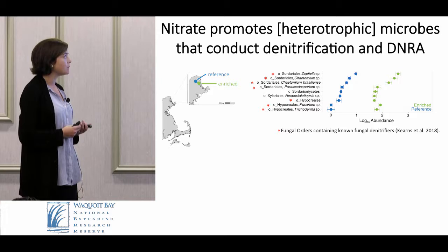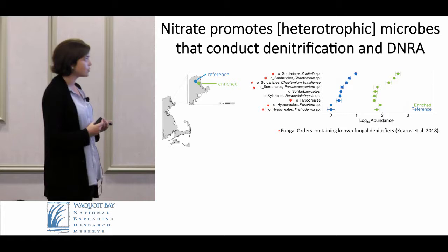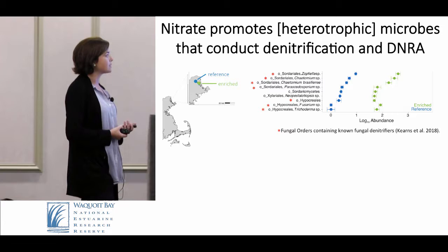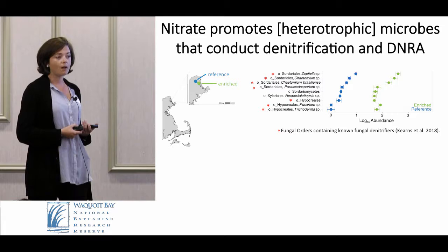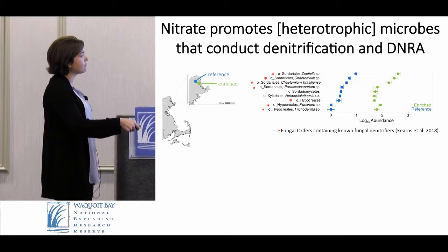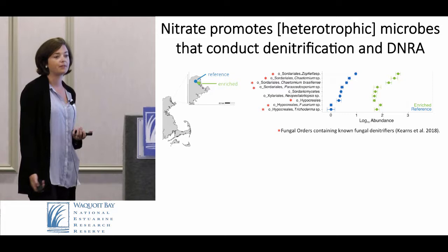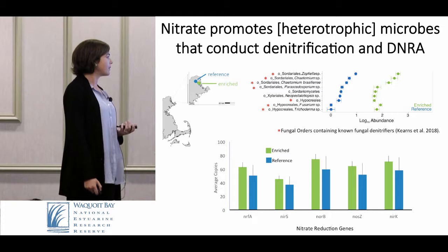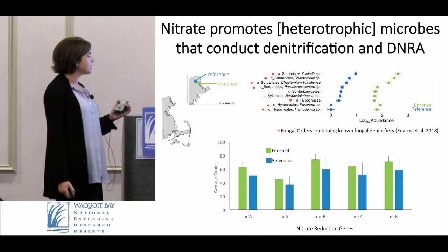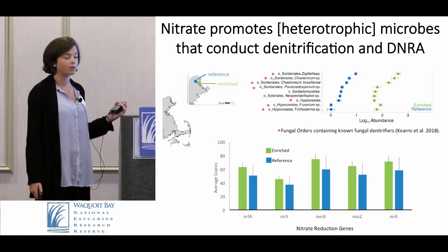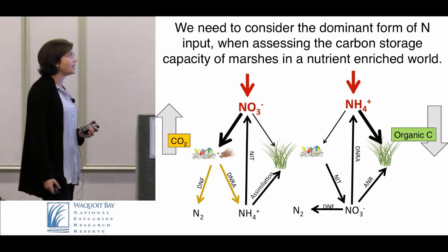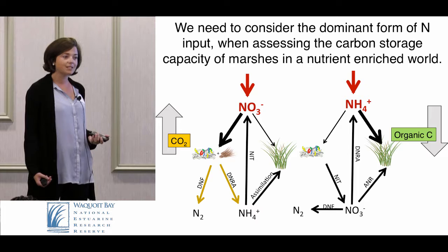Back in the field at Plum Island, using molecular techniques, we saw that nitrate in the enriched sites promotes heterotrophic microbes conducting denitrification and DNRA, increasing nitrate respiration. Work by Pat Kearns in the Bowen lab showed that specific fungal orders known to denitrify are enhanced — green represents enriched sites, blue represents reference sites. Similarly, nitrate reduction genes associated with denitrification and DNRA tend to be higher in the enriched salt marshes.